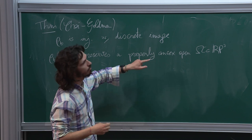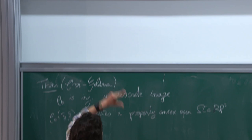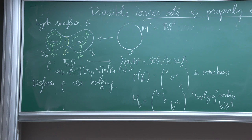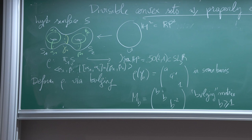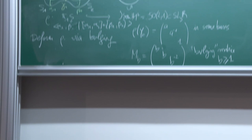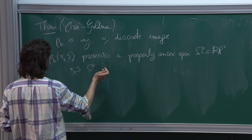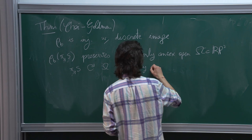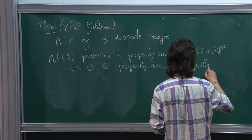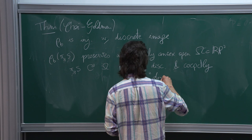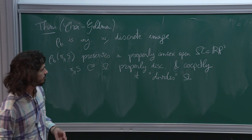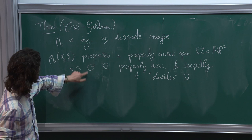By properly convex, I mean convex and bounded in some affine chart. If b is close enough to 1, Ω is going to be very close to H², which is a disk. But it's not going to be an ellipsoid — it's going to be a bit wider. And it's true for every b, not only for b close to 1. On top of that, π₁(S) acts on Ω properly discontinuously and co-compactly via ρ_b. We say that it divides Ω, and Ω is called a divisible convex set. This is how you prove injectivity and discreteness.